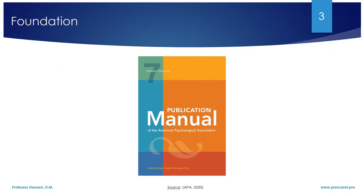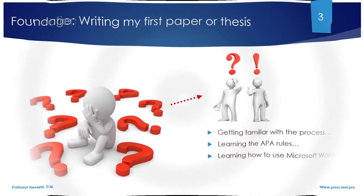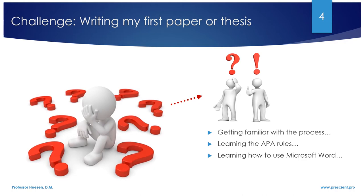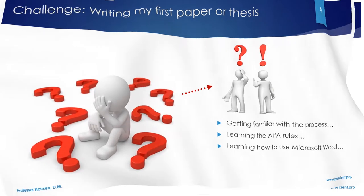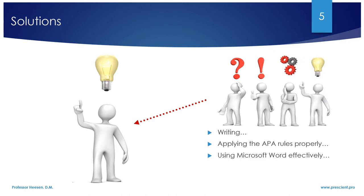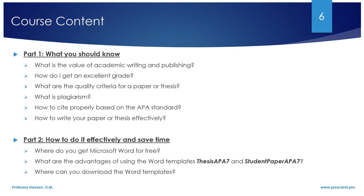Many students feel extremely challenged when writing their very first paper or thesis. I will help you to manage these challenges. In part one, you will learn about the value of academic writing and publishing, how to achieve an excellent grade, the quality criteria for academic papers and thesis, why it is important to avoid plagiarism, and how to cite properly based on the APA standard. In part two, you will learn where you can download Microsoft Word for free, about the advantages of using the Word templates Thesis APA 7 and Student Paper APA 7, and where you can download the Word templates.